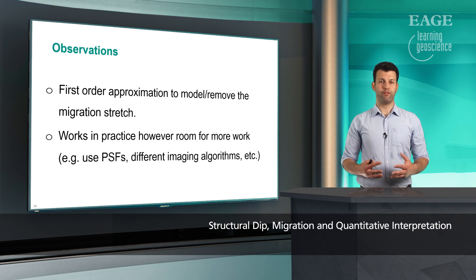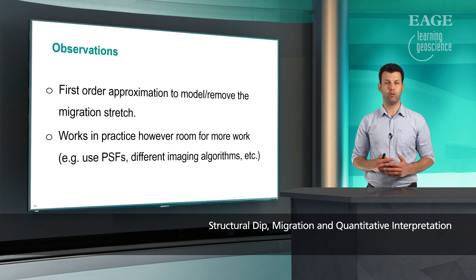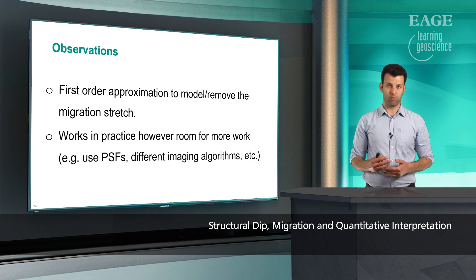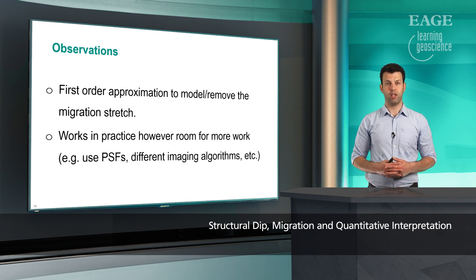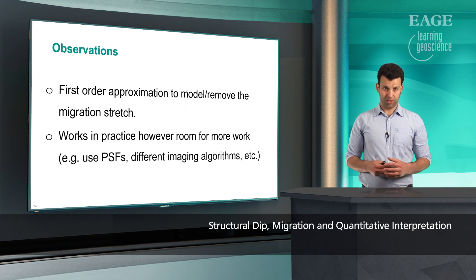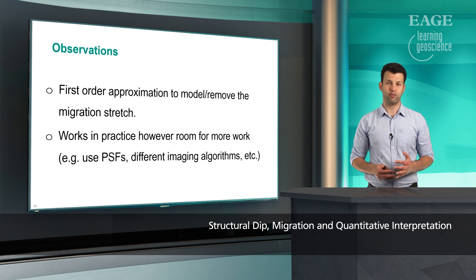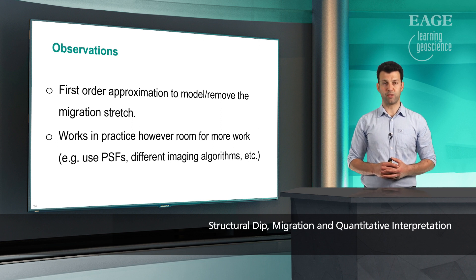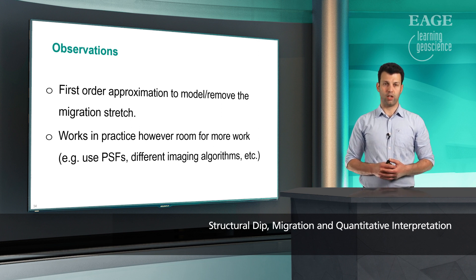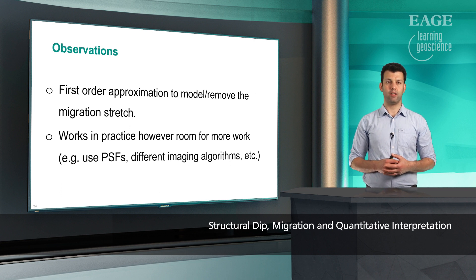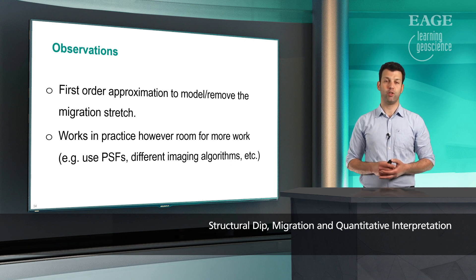So overall, I introduced a first order approximation to model and remove the migration stretch. I argued that by formulating this as a deconvolution, the problem becomes a conditioning step. Once you remove that stretch deterministically, you can use the corresponding migrated image for all the other applications and you know the input to them for the future is consistent. It works in practice. There are a lot of rooms for more work and more research. One could argue how large should the dips be so that we see an effect like that. Or of course, using point spread functions as I explained in the real data example completely and what is the effect if you use different imaging algorithms.